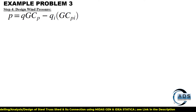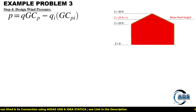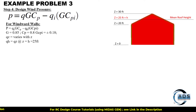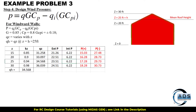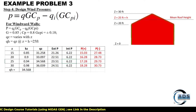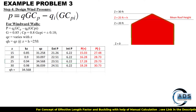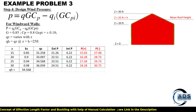Step 4 is to find out the design wind pressure using the specific equation. Since we have to calculate wind pressures for these levels, for the windward wall these are the parameters and factors previously calculated. In the chart, external p means external pressure, internal p means internal pressure, and the red-highlighted values are the net pressures. P positive means pressure when positive GCpi is considered and P negative means pressure when negative GCpi is considered.